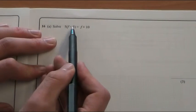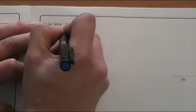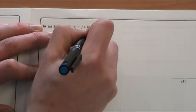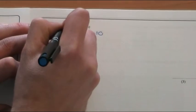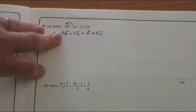We've got 5 lots of this bracket, so 5 of everything inside it. That's 5f minus 15 equals f plus 10. If you'd like to draw the lines to help you remember, go for it.